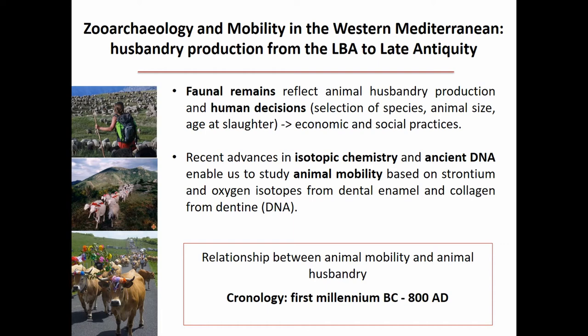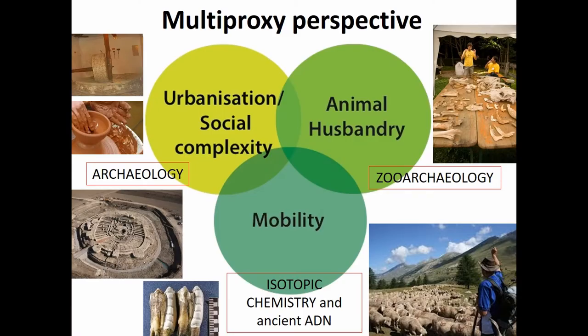The chronology spans the first millennium BC to the 8th century AD. We have a multi-proxy perspective, combining archaeology to provide context, zooarchaeology and more husbandry data, and then isotopic chemistry and ancient DNA to explore mobility — and to see how these three things interact with each other.